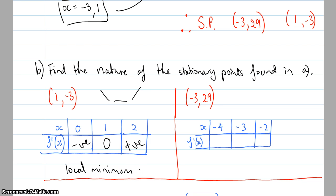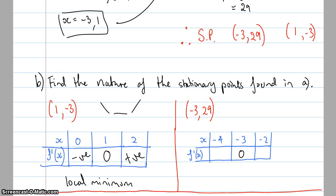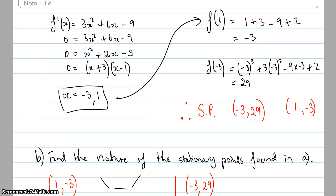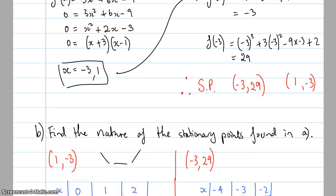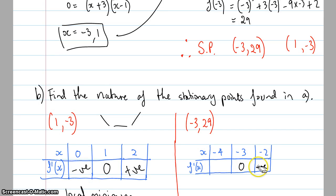Now for the other stationary point: when x = negative 3, the gradient equals zero. Choosing x = negative 2 to the right and substituting into the derivative: the calculation gives a negative number — I just care that it's negative.